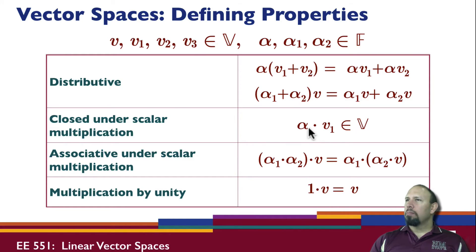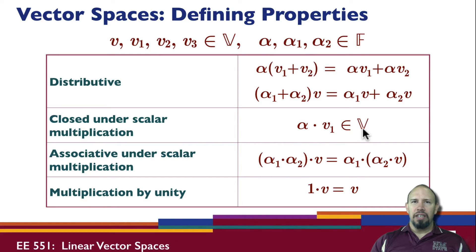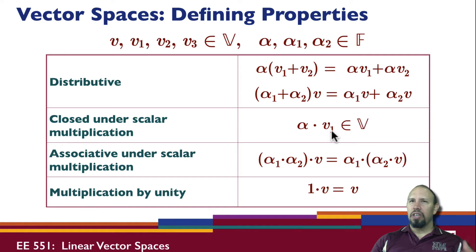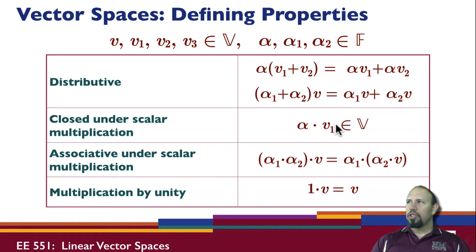Closure under scalar multiplication: any vector in the vector space, if I multiply it by a scalar in the field, is still in the vector space. This property basically shows that the vector space must be infinite — it goes all the way out to infinity. Because I can always multiply by a larger number: if I multiply a vector by 2, then that new vector by 2, and again by 2, I can get an arbitrarily large vector that must still be in the vector space. So basically the vector space must be infinite.